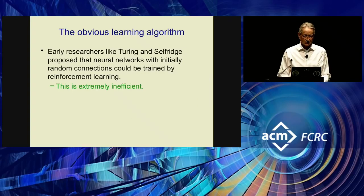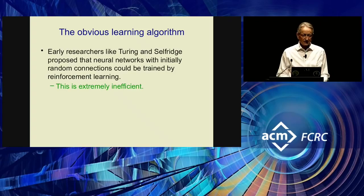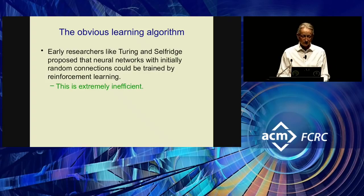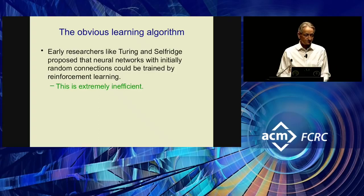There's an obvious learning algorithm for such systems, proposed by Turing, Selfridge, and many others. The idea is you start with random weights — this is how Turing believed human intelligence works. Rewards and punishments cause you to change the connection strengths, so you eventually learn. But this is extremely inefficient. It will work, but it's extremely inefficient.